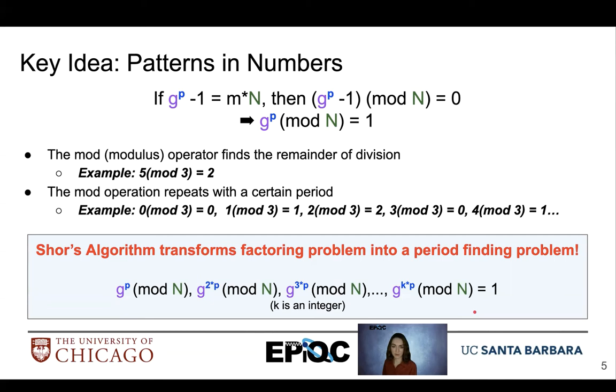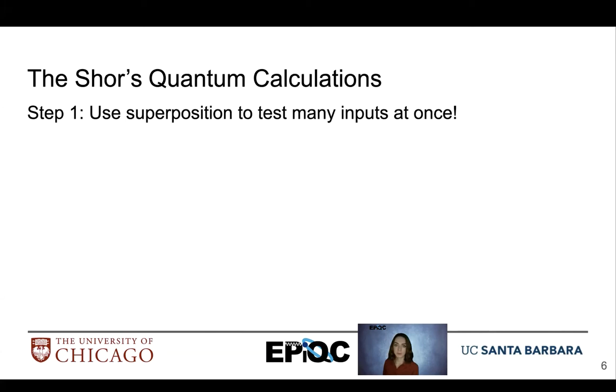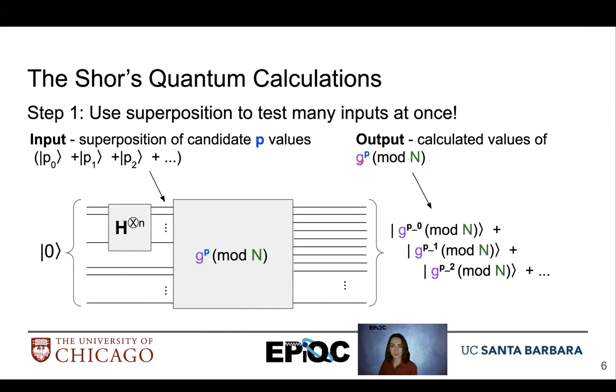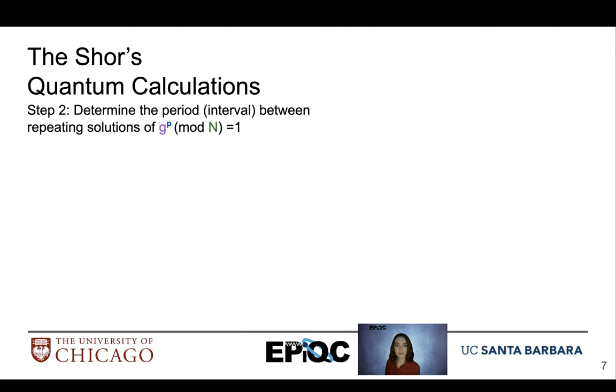With that in mind, we jump to Schorr's quantum calculations. We use superposition to test many input values at once. So here we can use our Hadamard operation to create a superposition of candidate p values. And then with those superpositions, we calculate g to the p mod n. So we calculate all these values here to find a superposition. Now we need to determine the period or interval between repeated solutions of g to the p mod n equal to 1.